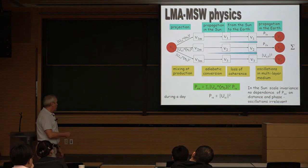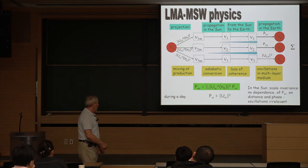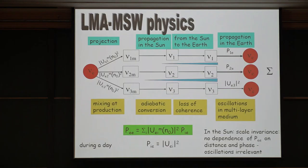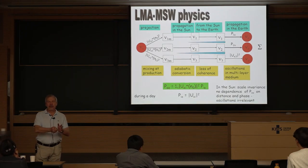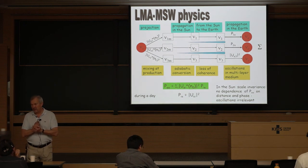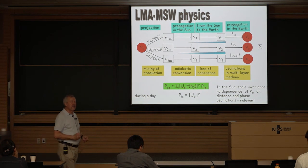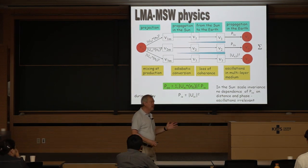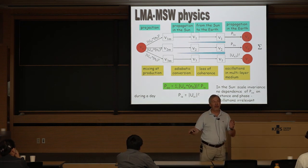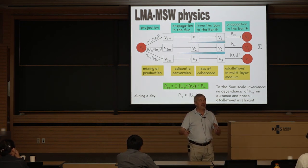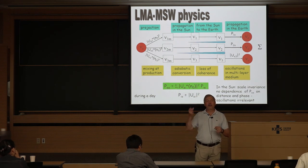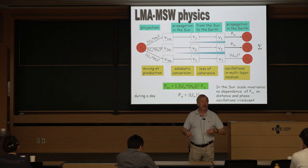If there is no matter effect — neutrinos detected during the day with no Earth matter — probabilities reduce to vacuum mixing angles. The day-time survival probability depends only on the initial density at the production point; since the final density is zero, it depends on nothing other than initial conditions. This is the elegant result of the adiabatic approximation: everything is determined by initial and final conditions, completely independent of the density profile in between. The formula is accurate to about 10⁻⁴, requiring no further corrections.